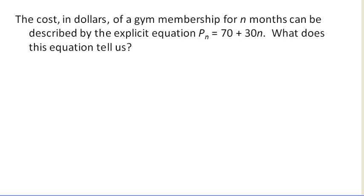The cost in dollars of a gym membership for n months can be described by the explicit equation. This is an explicit linear equation here, based on the form, 70 plus 30n. And we're asked, what does this equation tell us?